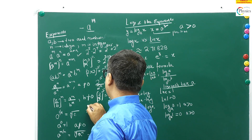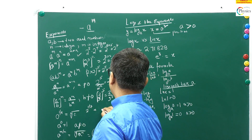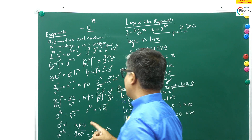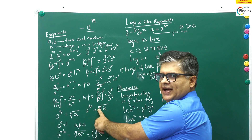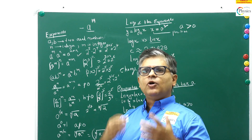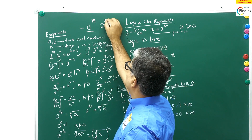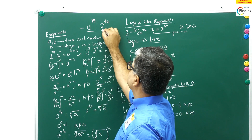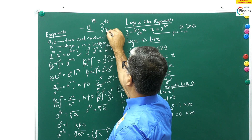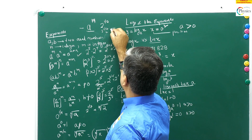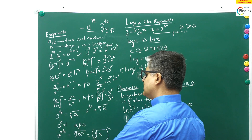If I say 2 raised to power 1/7, a good way to write this is using a root sign with 7 outside — this is the 7th root of 2. So if you want the cube root of 2, you write 2 raised to power 1/3. If it's the 7th root, you write 2 raised to power 1/7. In entrance examinations, they may also write it with a small 7 outside the root sign. This is a way to express exponents.